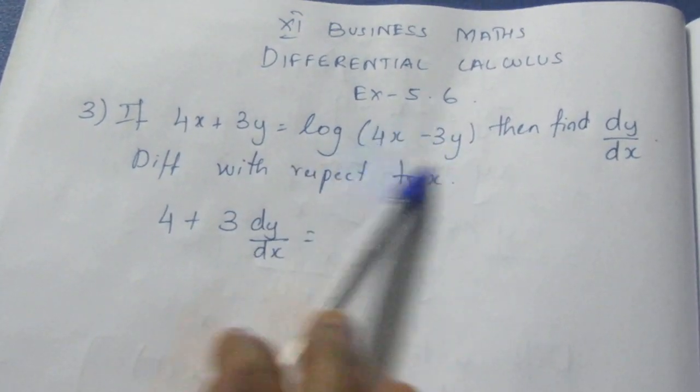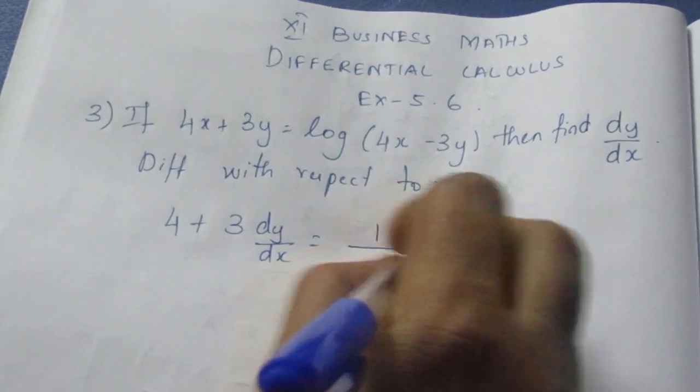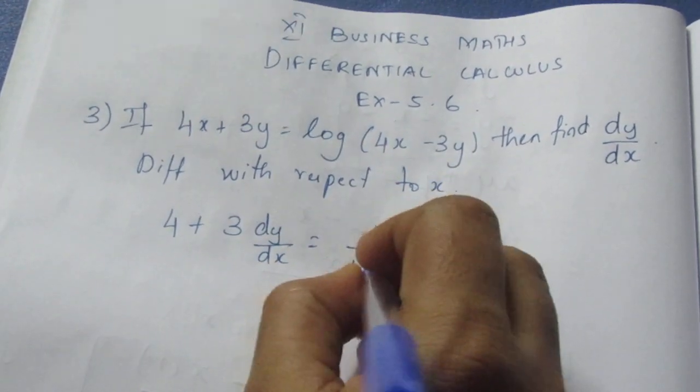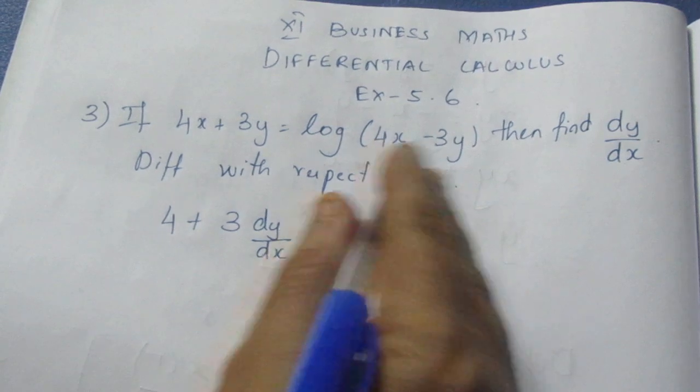So 1 by x becomes 1 by (4x minus 3y) for the full value.